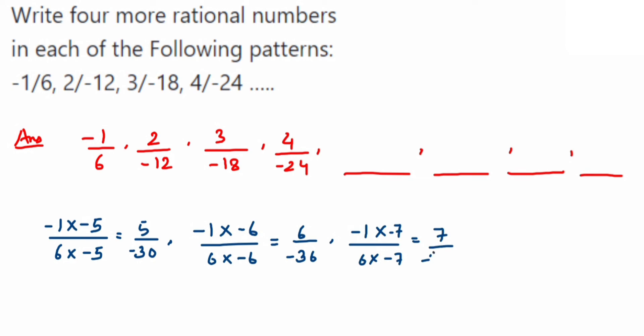So that's it, we got the next four rational numbers. From here we can write down: the next one is 5 upon minus 30, and 6 upon minus 36, 7 upon minus 42, and the next one is 8 upon minus 48. So that's it, we got the solution.